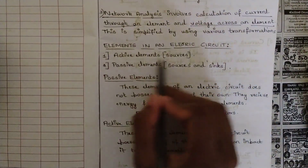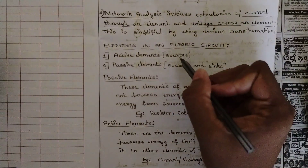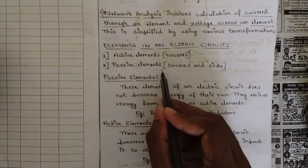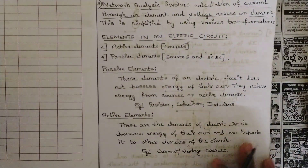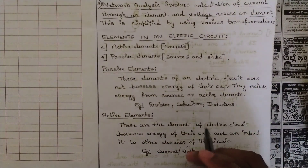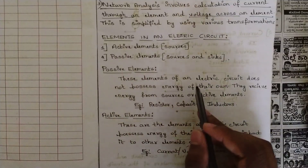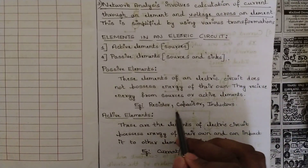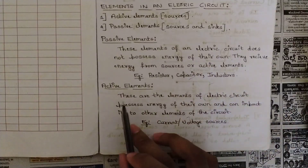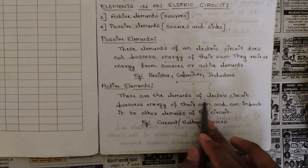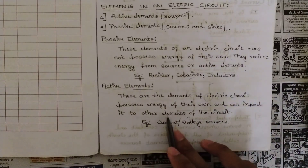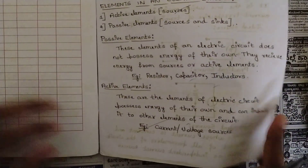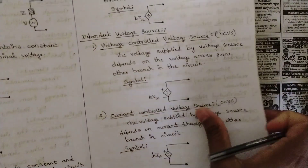Elements in electric circuits are classified as active elements and passive elements. Active elements consist of sources — the two main types are current sources and voltage sources. Passive elements such as resistors, capacitors, and inductors do not possess energy of their own; they receive energy from active elements. Active elements possess energy of their own and can impart it to other elements in the circuit.